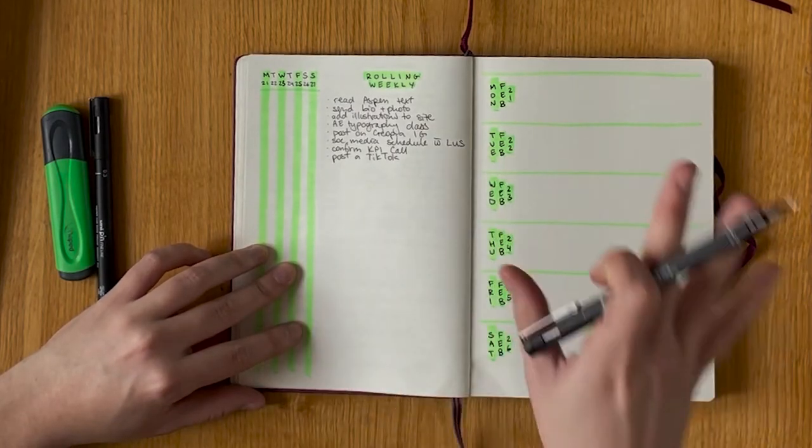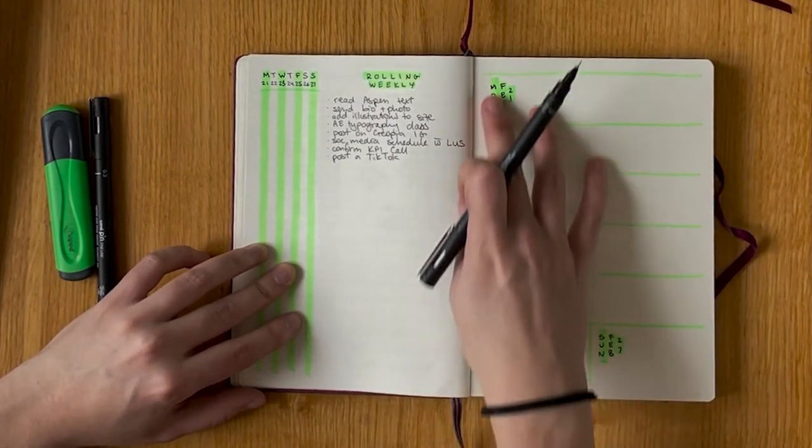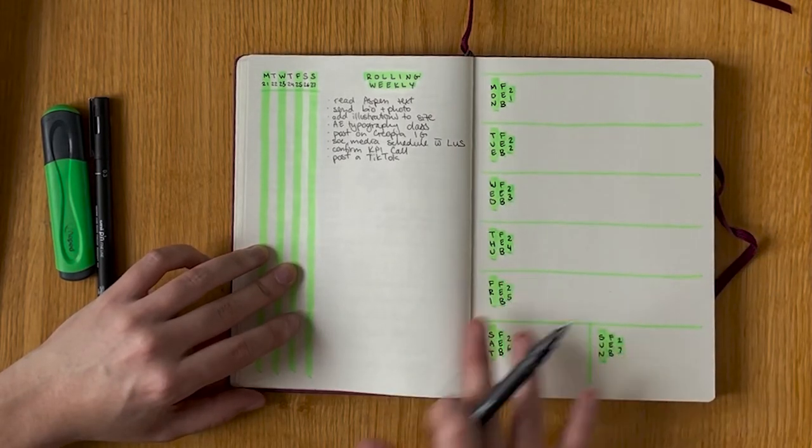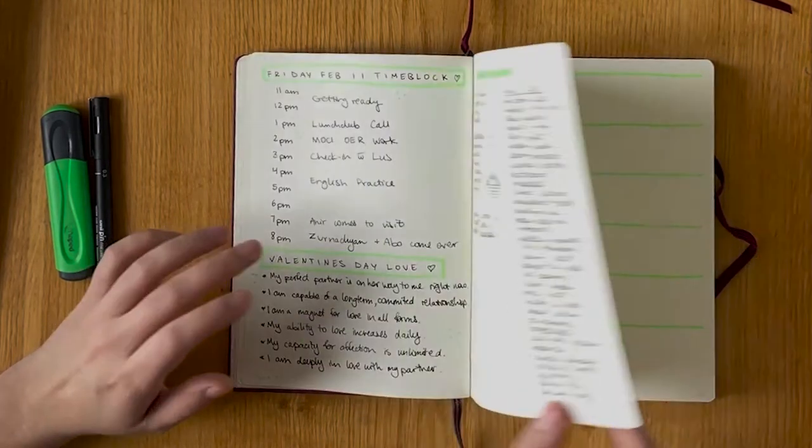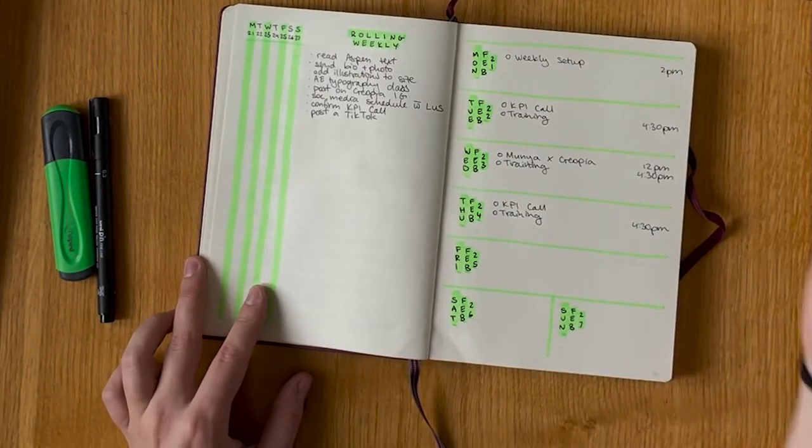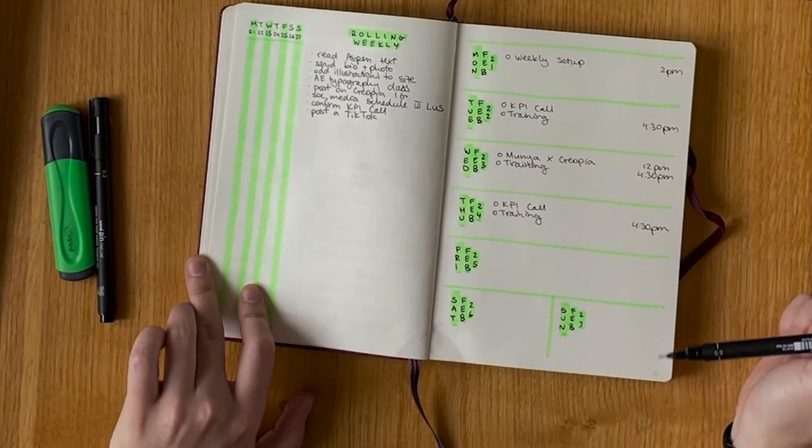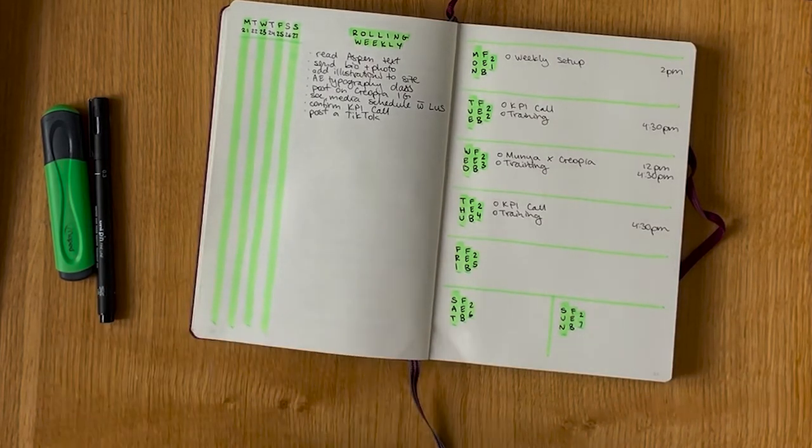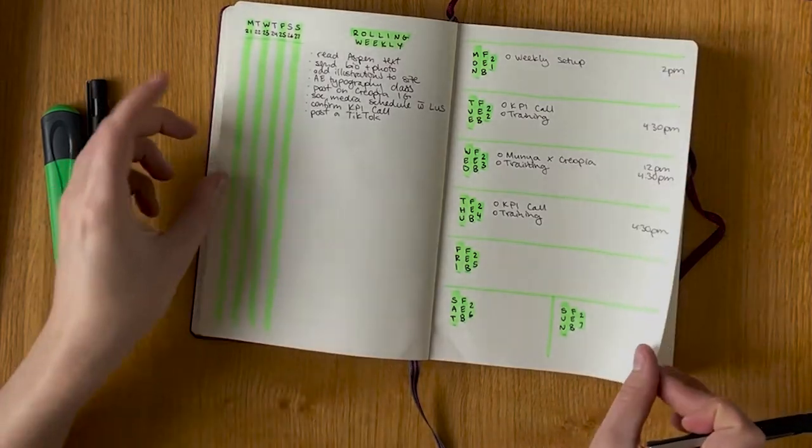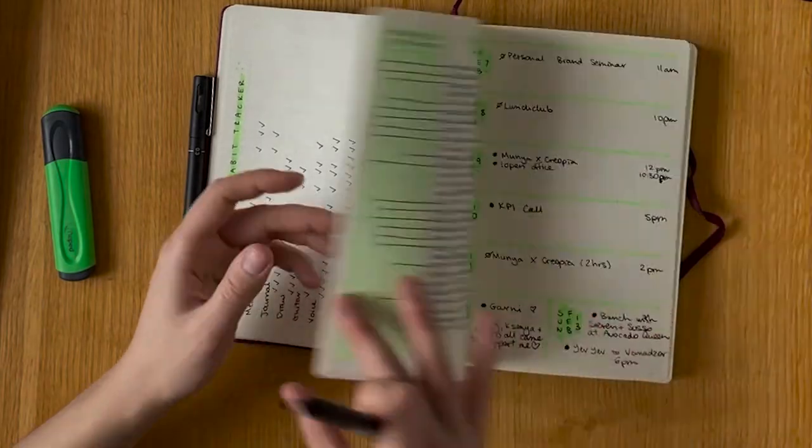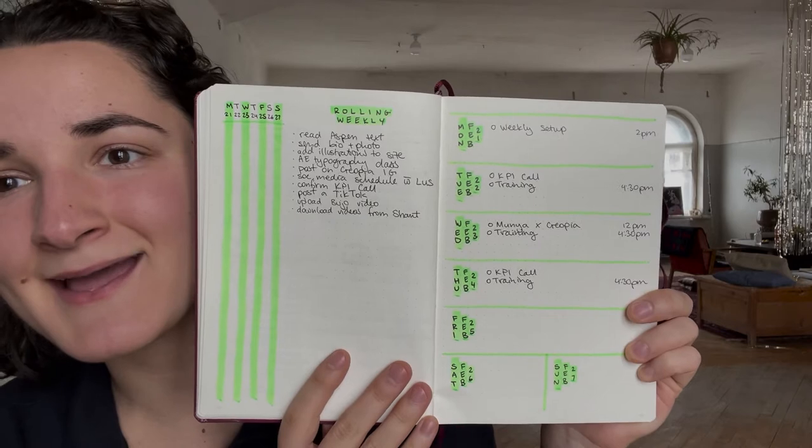So now the second half of setting up my week is filling in the events and appointments that I know I will have this week, so I'll do that now quickly. So now I know approximately what every day of the week will look like in terms of schedule, and this is pretty much all that I need to go for my week ahead. And then yeah, this is my very very simple bullet journal setup. So now my entire week is all nice and set up and it's very satisfying to watch it all fill in over the next seven days.